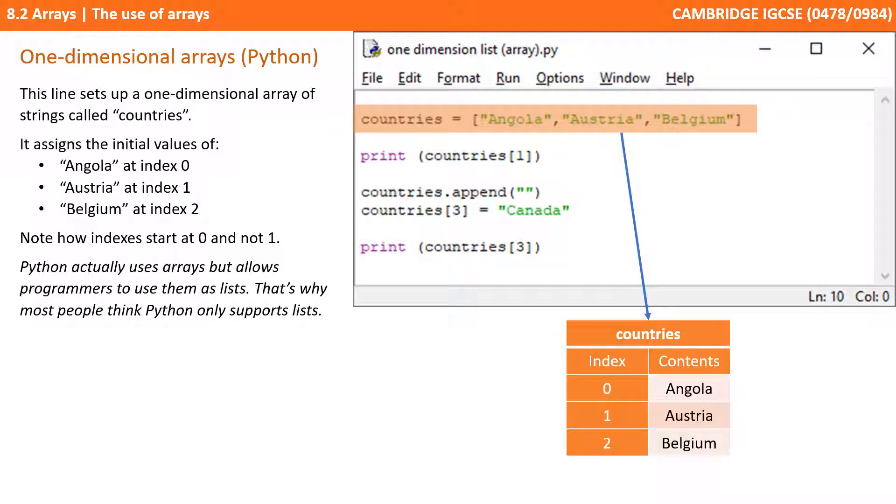So, let's actually have a look then at an example of a one-dimensional array and here we're using Python. This first line sets up the one-dimensional array of strings and it calls that array countries. It assigns it the initial values. So, at index 0 we have Angola, index 1 is Austria and 2 is Belgium. And note how here indexes are starting at 0 and not 1.